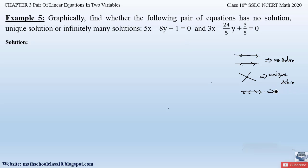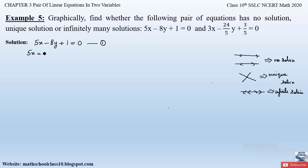All the points on the coinciding line give infinitely many solutions. Now let us find out for the given two equations whether they have no solution, unique solution, or infinite solutions. The first equation is 5x minus 8y plus 1 equal to 0 — let's call this Equation 1. To represent it graphically, we find x: 5x equals 8y minus 1, so x equals (8y minus 1) divided by 5.